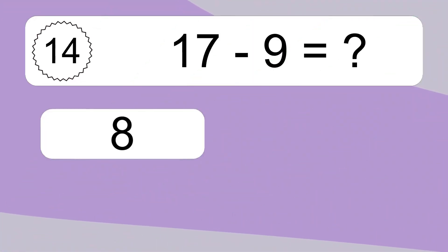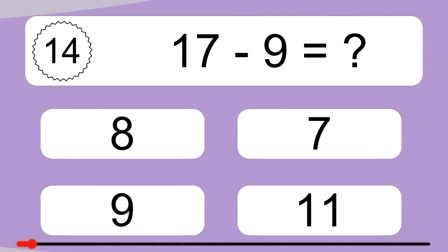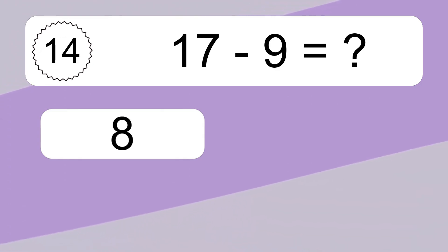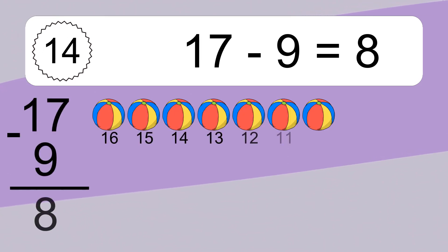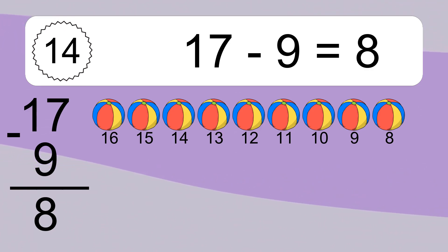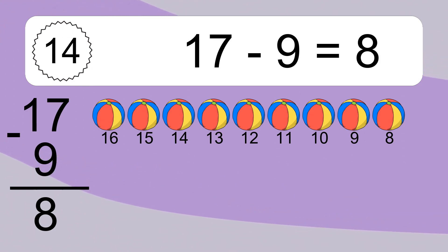17 minus 9 equals what? 17 minus 9 equals 8. Let's count it: 16, 15, 14, 13, 12, 11, 10, 9.